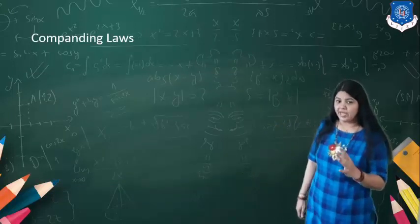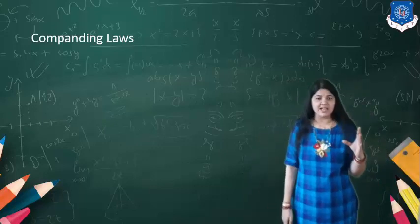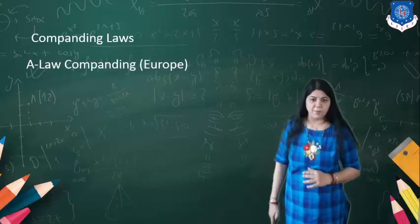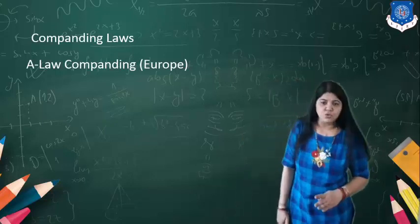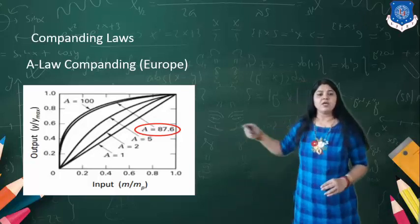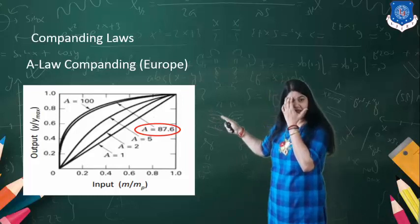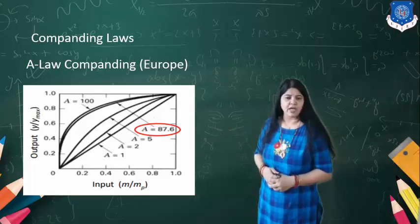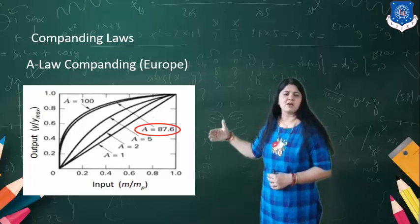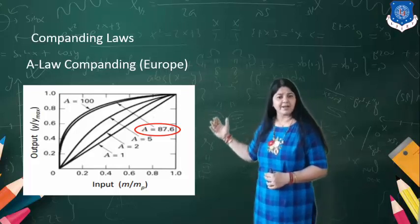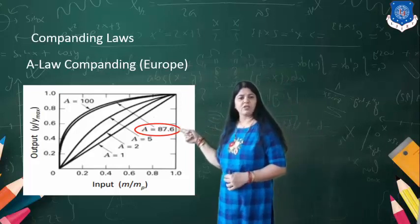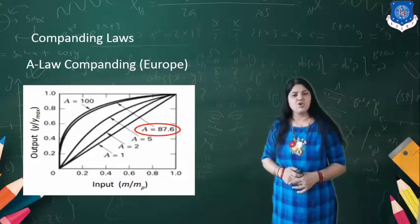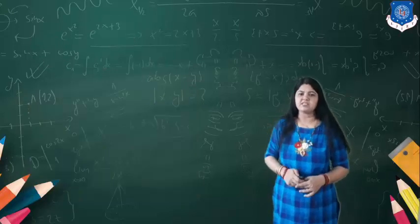For performing compression and expansion, various laws are used. The A-law for companding is used in Europe. At the value A = 87.6, we have maximum companding, and this is used in Europe for various television systems.